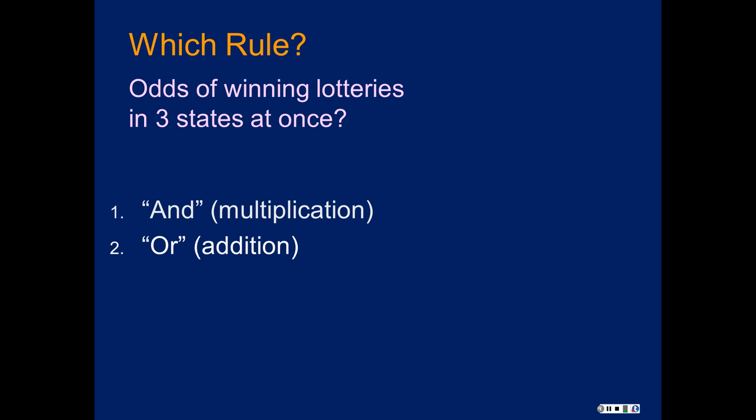What are the odds of winning lotteries in three states at once? Is this disjoint? No — you could win in Ohio and Indiana and Texas. So if you won in all three, it would be winning in Ohio and winning in Indiana and winning in Texas. So this is going to be a multiplication situation.